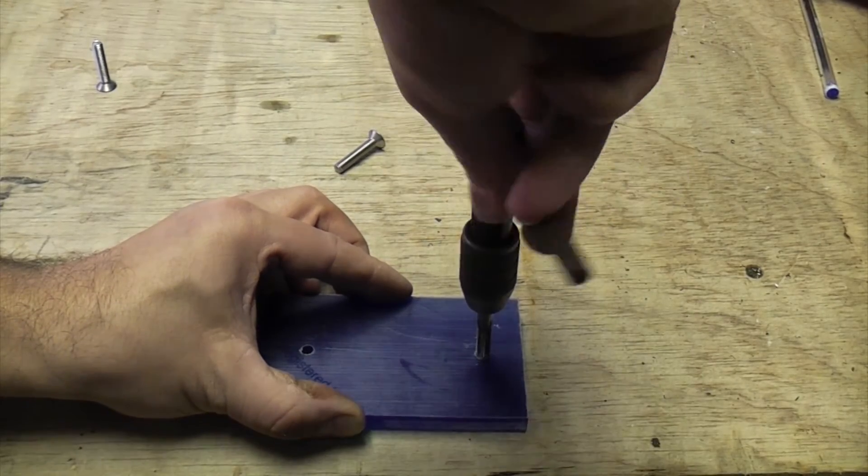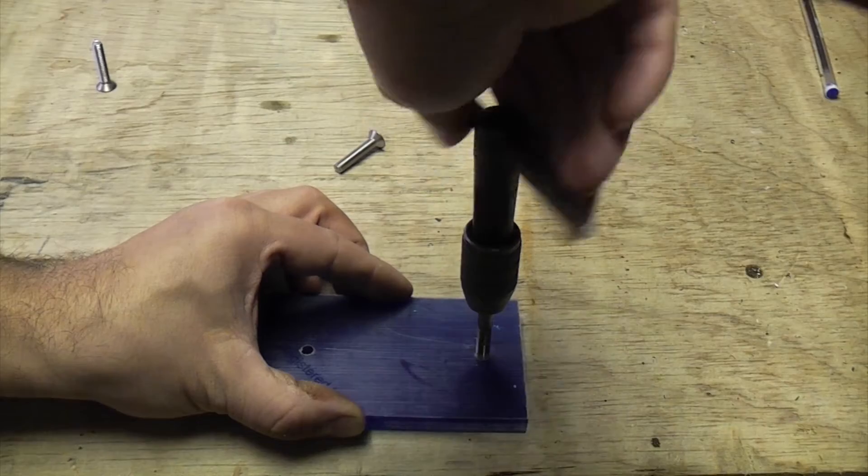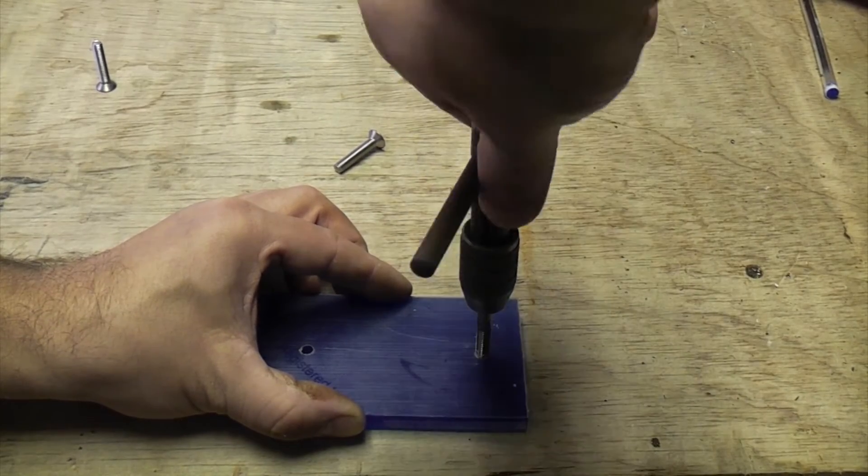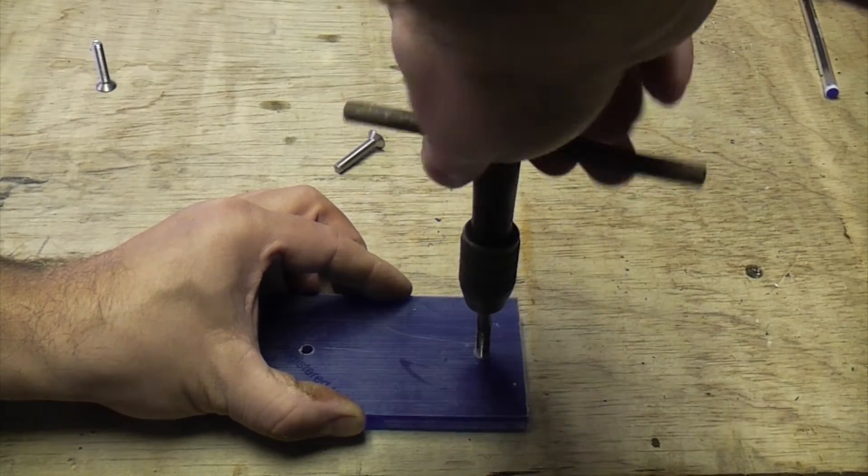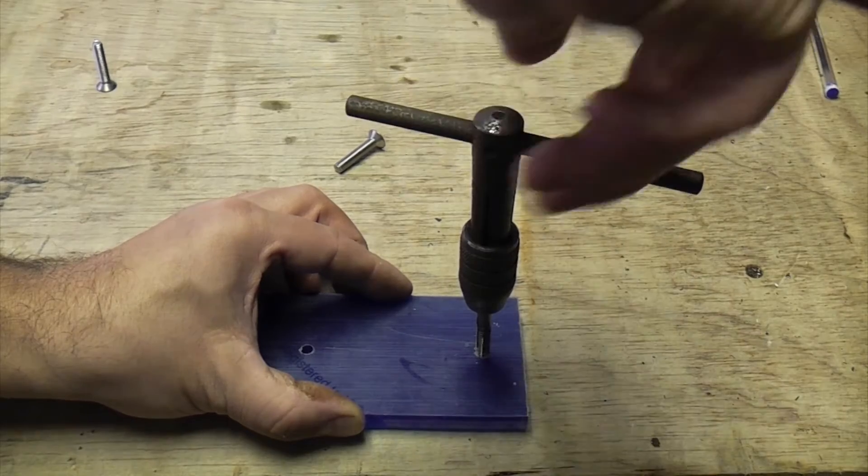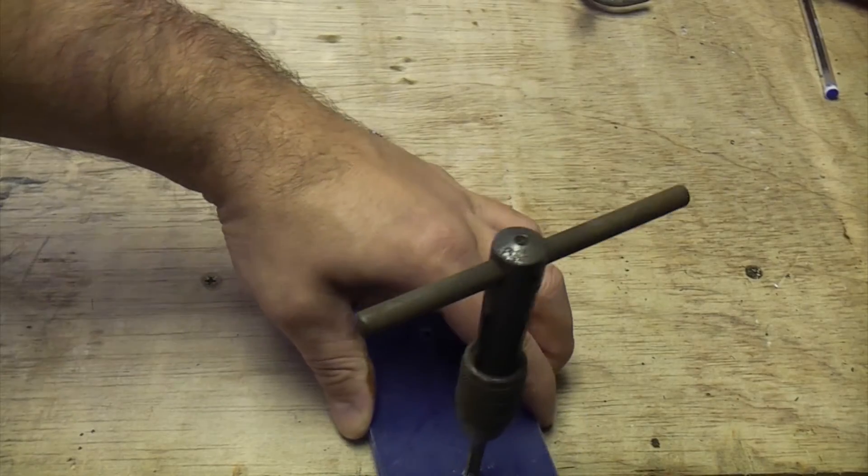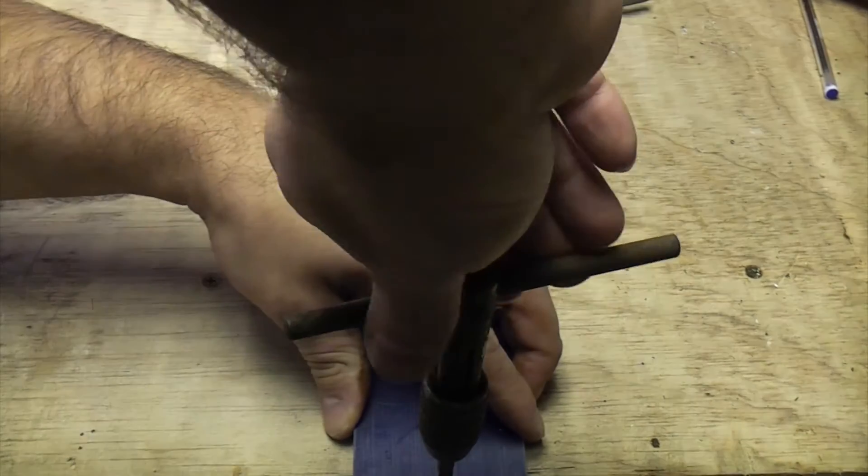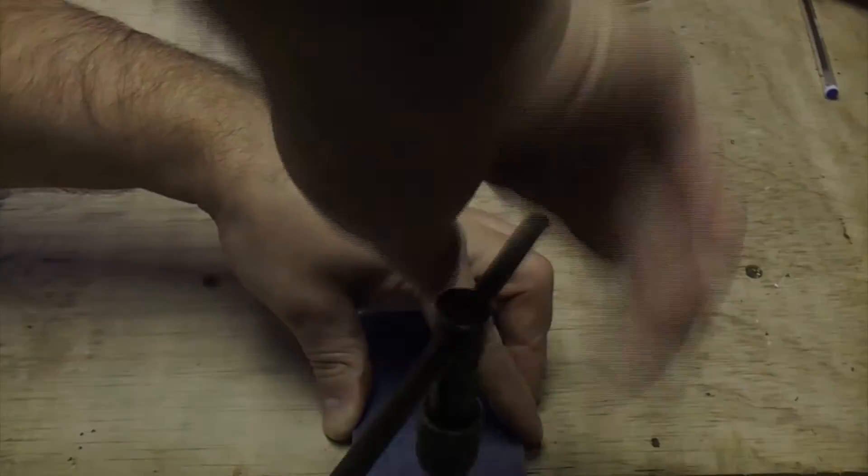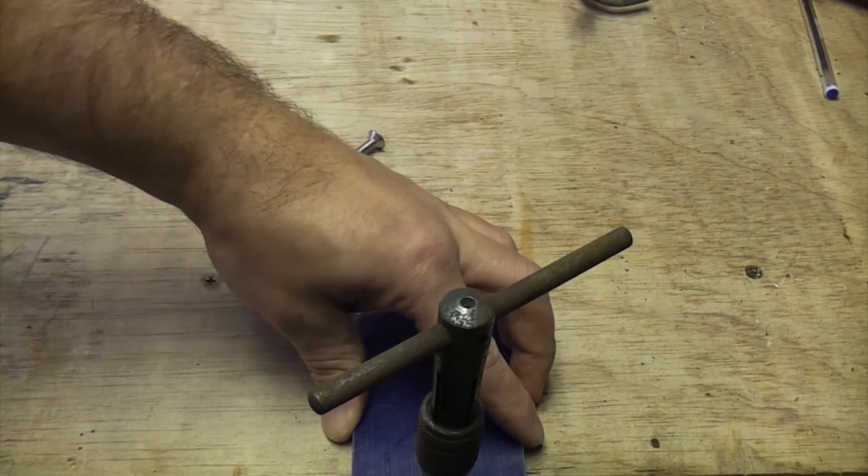You can go quite quickly in perspex. Again, do a few revolutions forwards and then half a turn back just to break the chip off. I'm going to have to just move this over the edge here because we are coming through now, and then once you've gone through you can just reverse it.